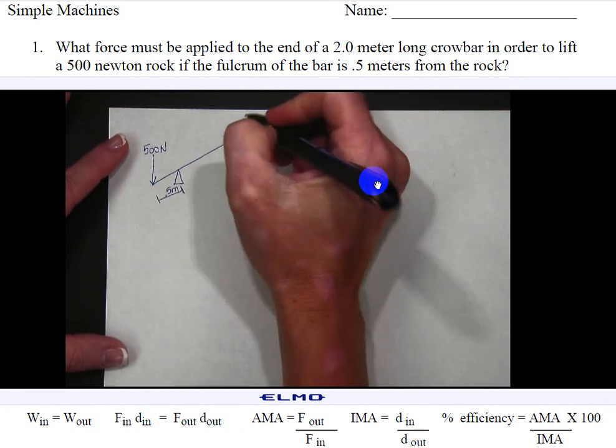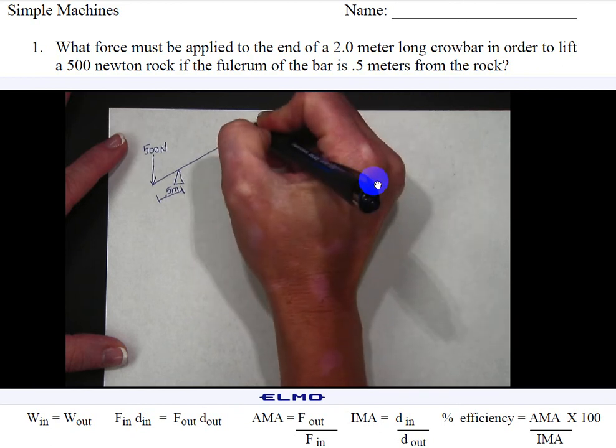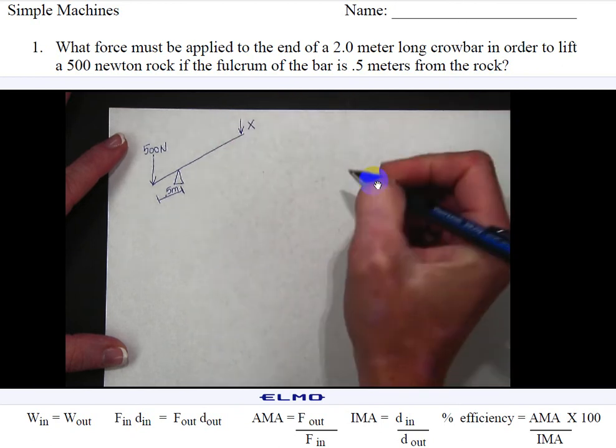My force is going to be applied at the other end of the lever and I don't know how much force I'm going to need to apply so I'm going to label it x. That's what I'm going to find.